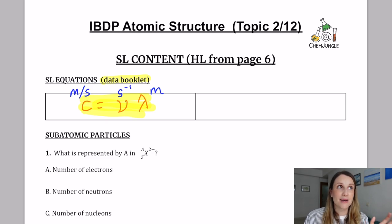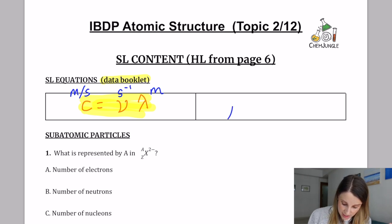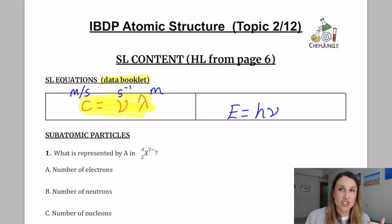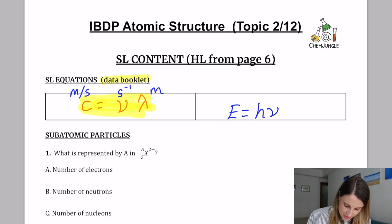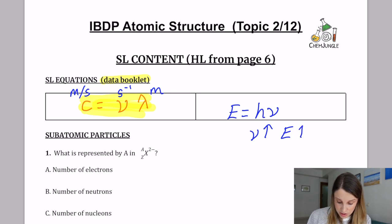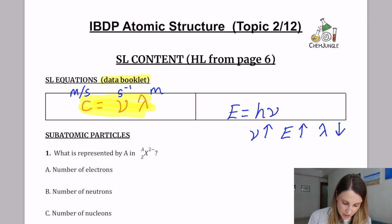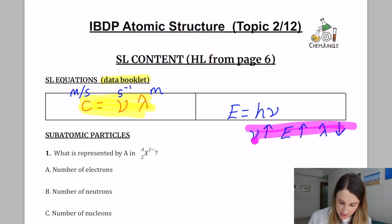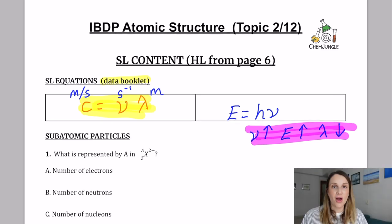There are no other equations explicitly in the SL syllabus, but the HL equation E = hν suggests the relationship between energy and frequency, which is often referred to in SL content. You should understand that as frequency increases, the energy of the particle also increases and the wavelength decreases. This summary of the relationship between frequency, energy, and wavelength is really what you need to know for this unit.